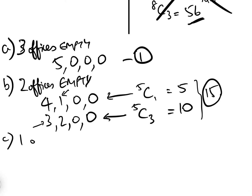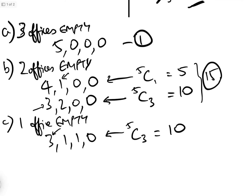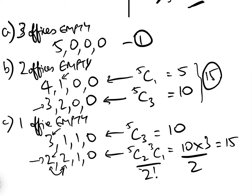Case C: one office empty. We could have three, one, one, zero — so 5C3 ways of choosing those three, and the other two go into any two of the other identical offices, which equals 10. We could also have two, two, one, zero — there are 5C2 ways of picking the first two, then 3C1 ways of picking the next group, but we divide by two factorial because the offices are identical and we don't want to double count the two groups of two. That gives 10 times 3 divided by 2, which equals 15. So the total for one office empty is 10 plus 15, which is 25.